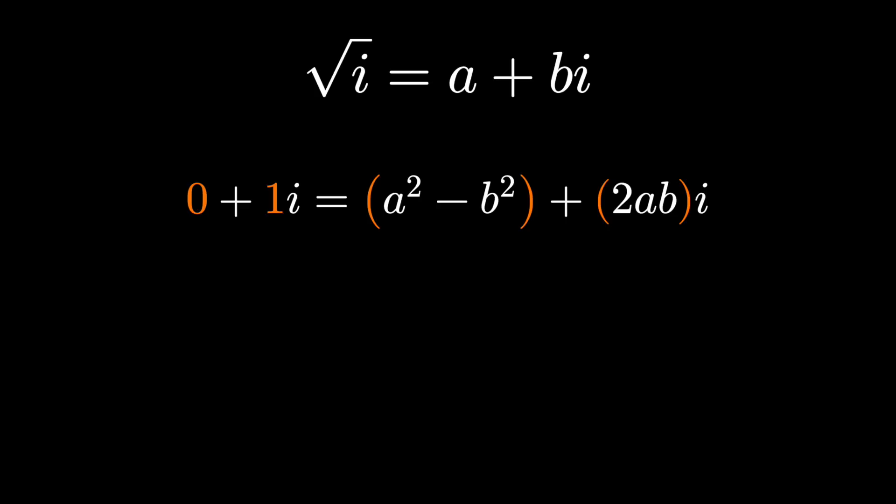Here I'm matching up the real part of the equation and the imaginary part of the equation via their coefficients. Since a squared minus b squared on the right is a real number, it's the real part of the equation, it has to equal the real part of the left-hand side. So a squared minus b squared has to be 0.